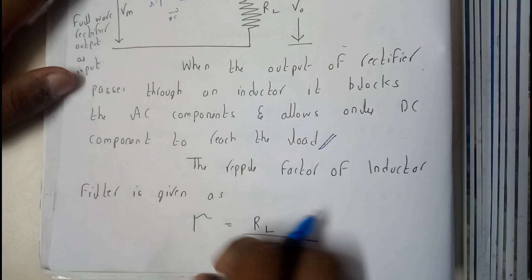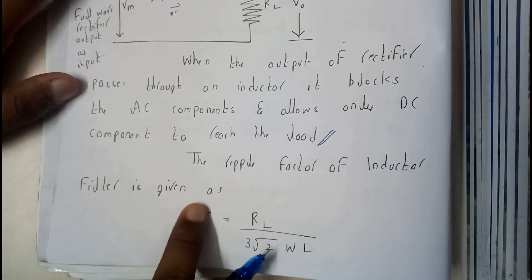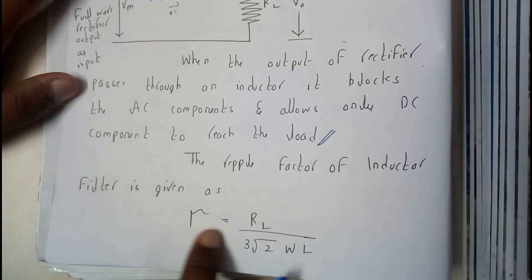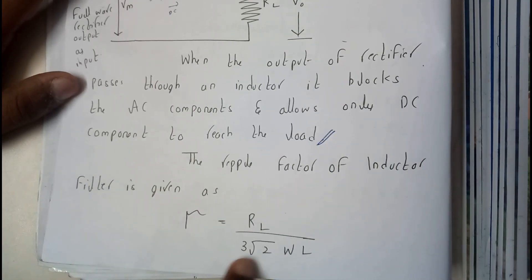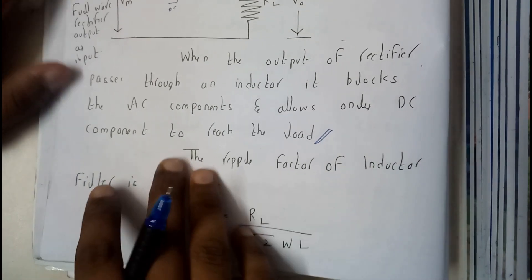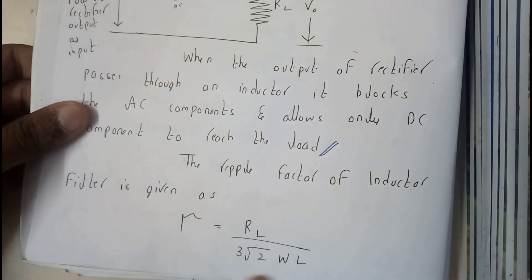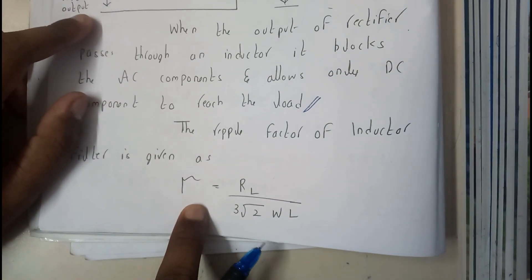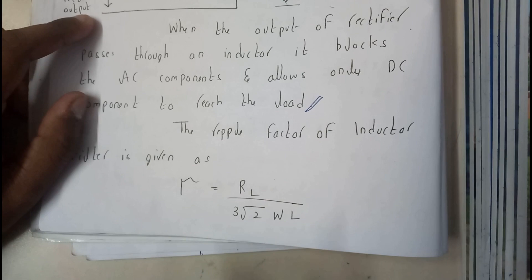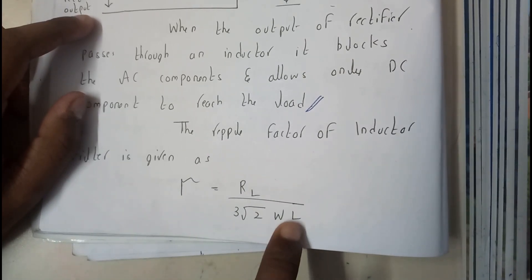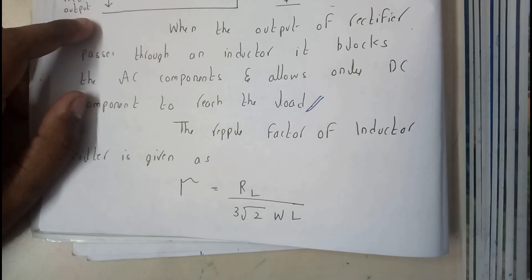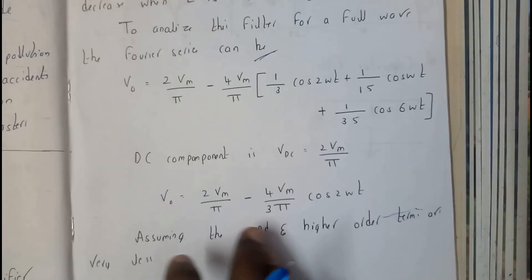The ripple factor of an inductor filter is given as: ripple factor equals RL divided by three root two wL. From this you can say that the ripple factor increases if RL is more, and ripple factor decreases if L the inductance is more.